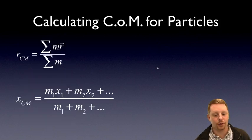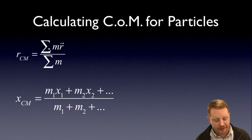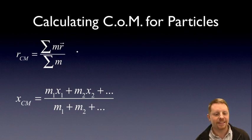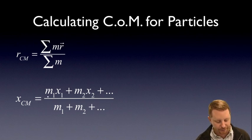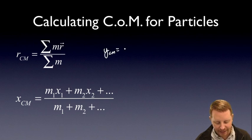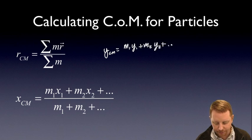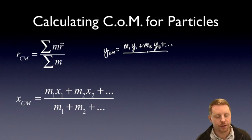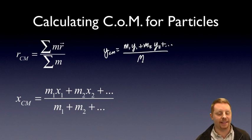Calculating the center of mass for particles is a bit more involved. The position vector to the center of mass is the sum of all the individual mass particles times their position vector, divided by the total mass. If something's in just the x-coordinate, we could say that the x center of mass is m1 times x1 plus m2 times x2, and so on, divided by the total mass. In similar fashion, we could find the y center of mass as m1*y1 plus m2*y2, and so on, divided by the total mass — capital M. You can keep expanding that for the z-dimension as well.